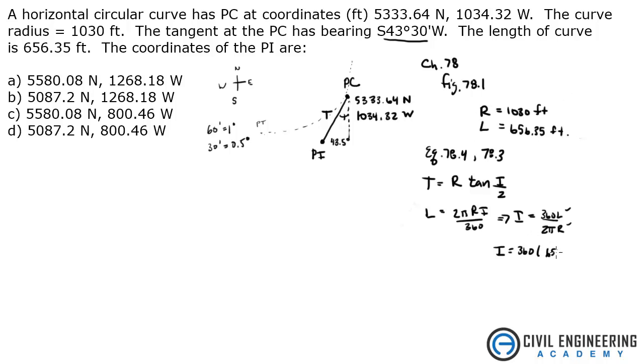So that's 656.35 all divided by 2 pi times R, which is 1030 feet. What does that give me? I get an i, an interior angle here, of 36.51.